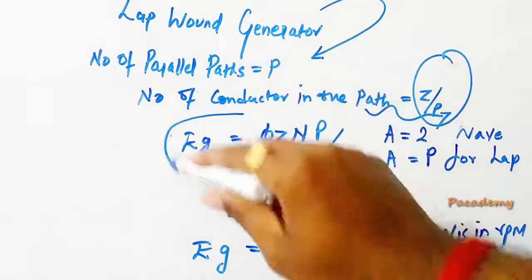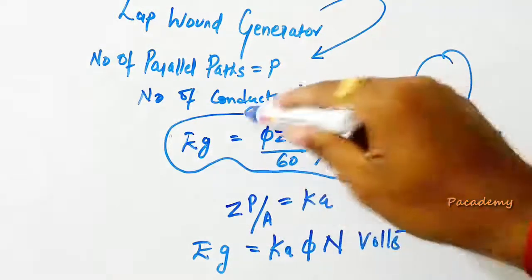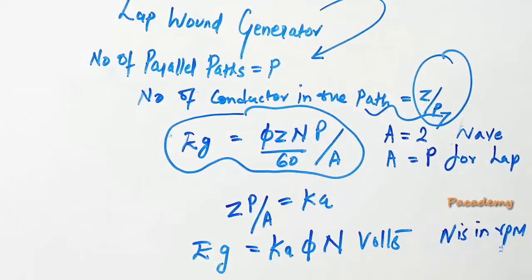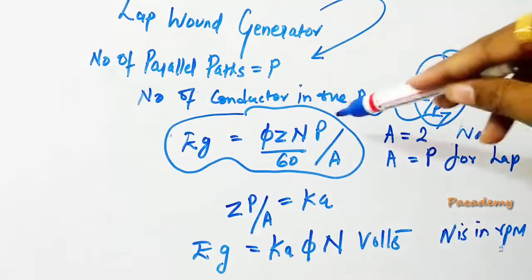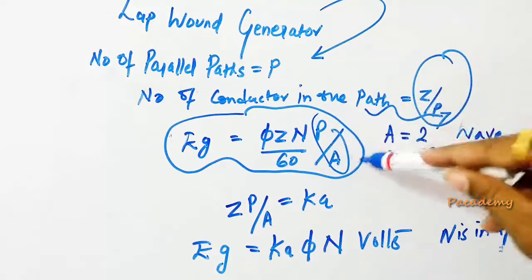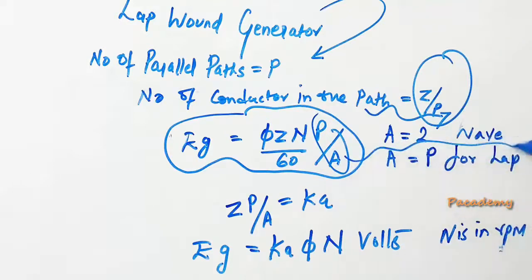The generalized equation of a generator for lap and wave wound can be written as 𝜙ZN by 60 times P by A, where A equals 2 for a wave wound generator and A equals P for a lap wound generator.